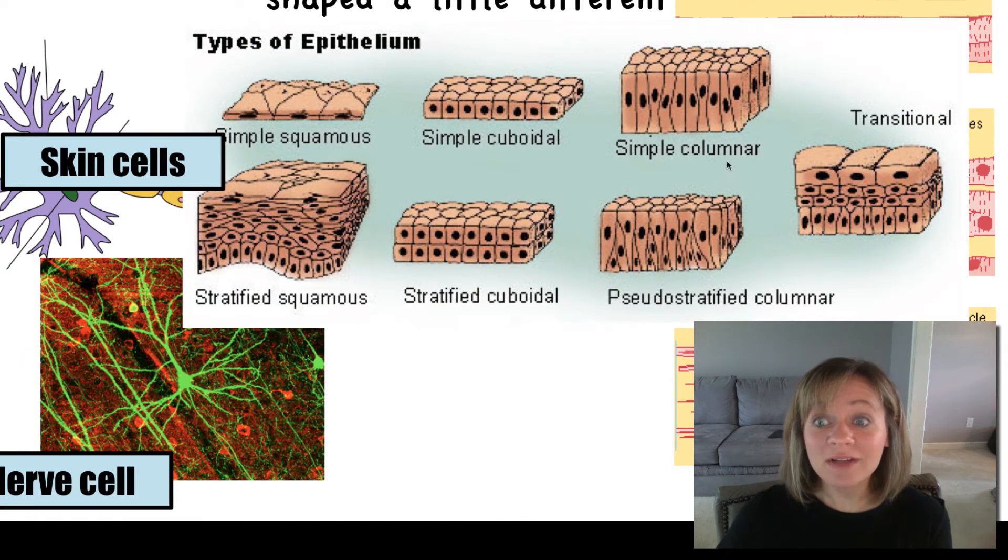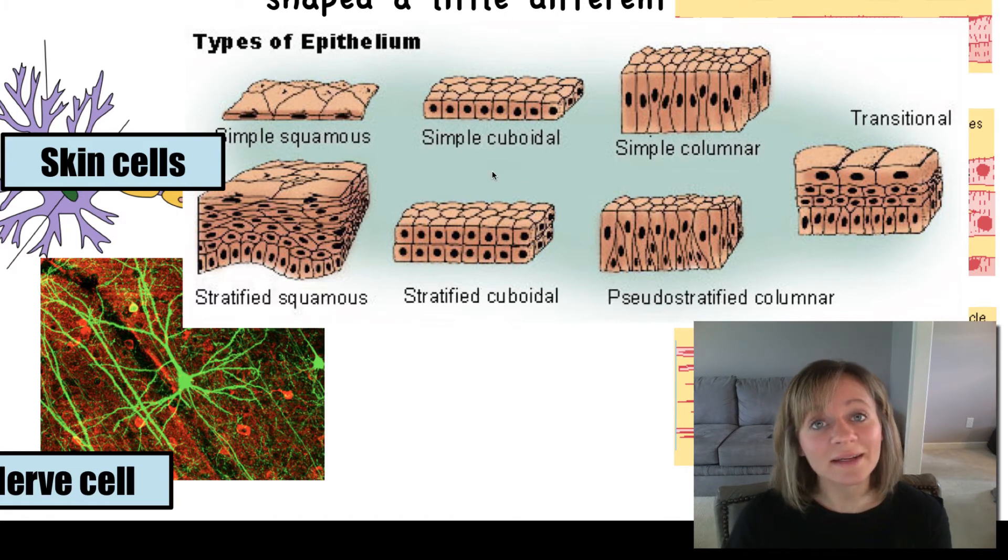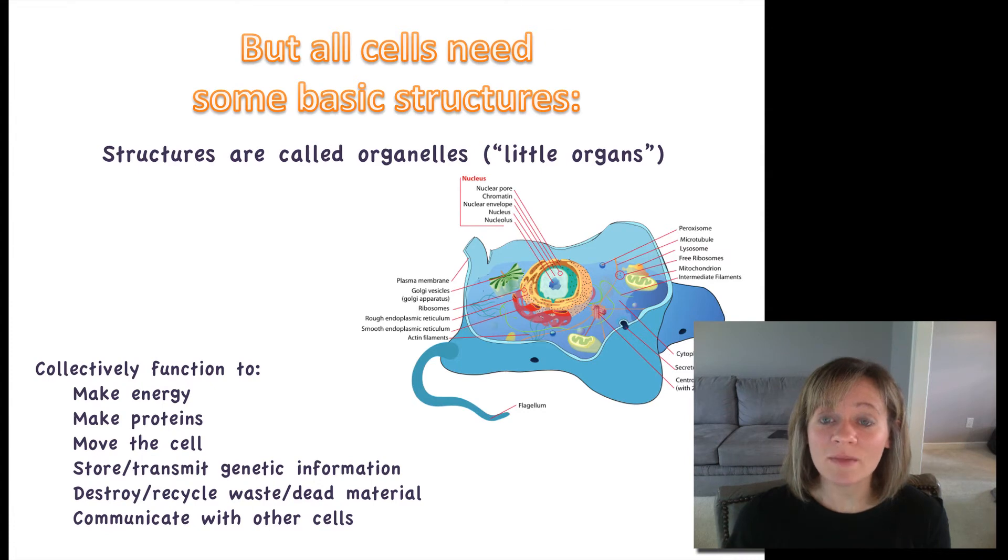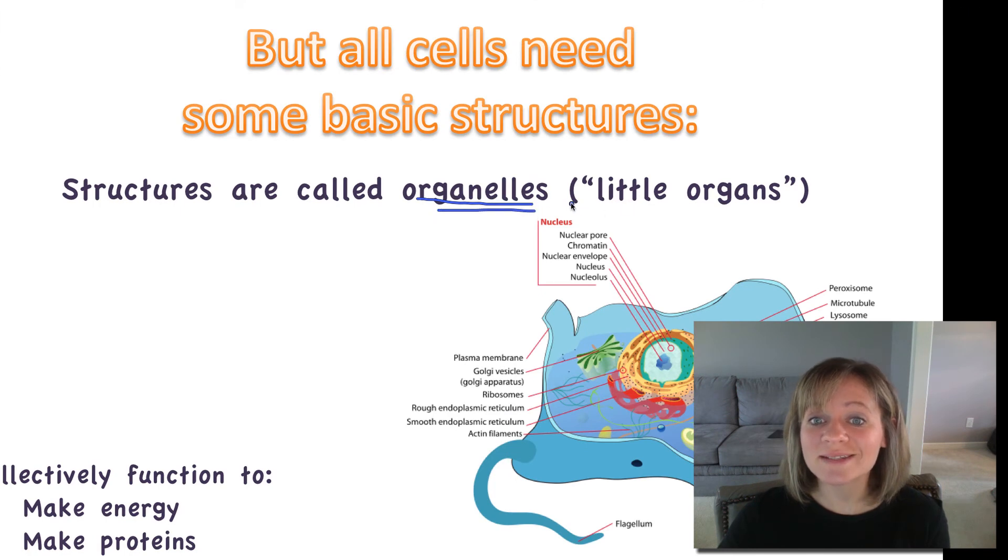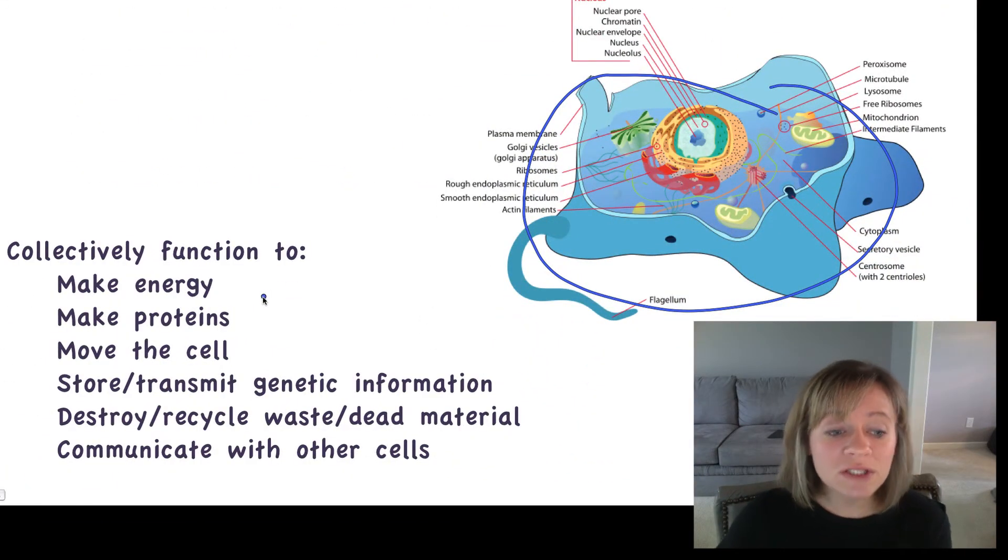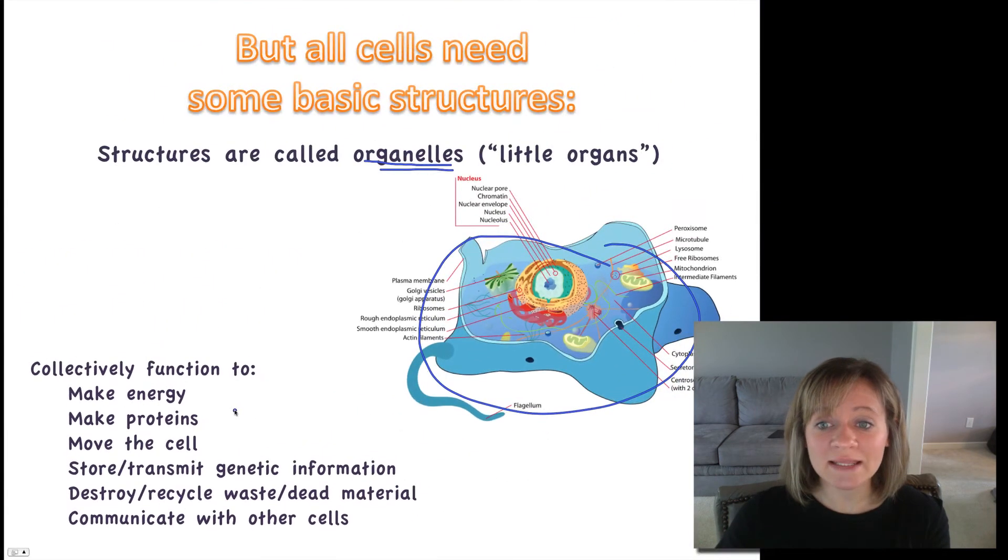You have skin cells, and lots of different types of skin cells, in fact. Simple, simple cuboidal, columnar. So these are what make up your outside skin and the lining of most of your intestines, for example. So these are all cells, but they all have some things in common. They need some basic structures, and these basic structures are called organelles, which literally means little organs. And collectively, all of these organelles function to make energy for your cells, make proteins for your cells, move the cell, store and transmit genetic information, destroy or recycle dead or waste material, and finally, to communicate with other cells.